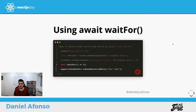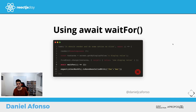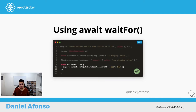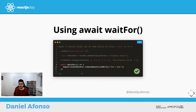Fourth mistake: using waitFor with an empty callback. waitFor is an asynchronous util that waits until the assertion inside it resolves to true. If you pass it an empty callback, it just waits for the next update and then moves on without checking anything. This might work in certain cases but can make your tests flaky. Always pass the actual assertion inside waitFor and wait for it to resolve.